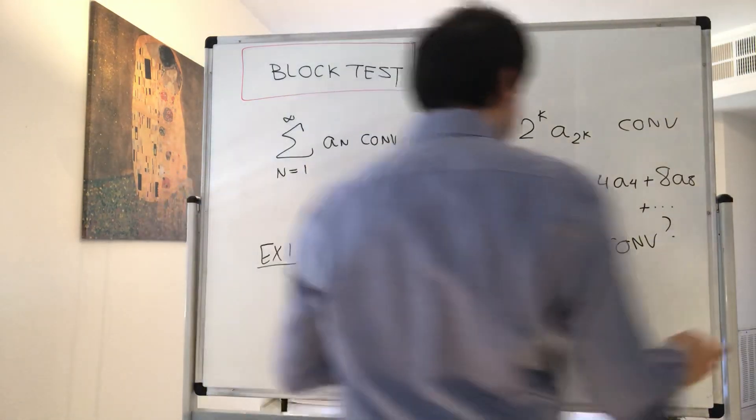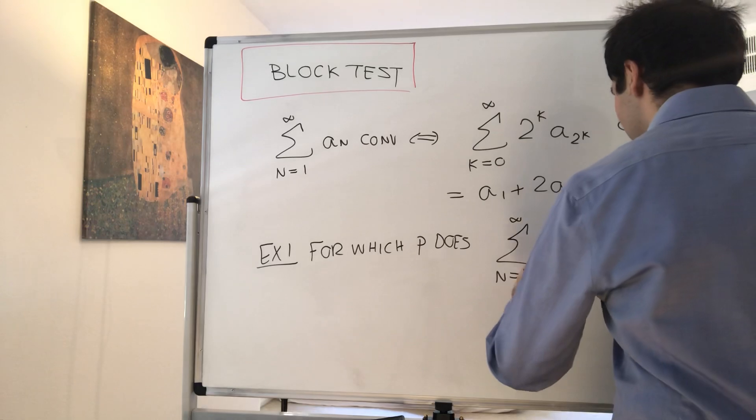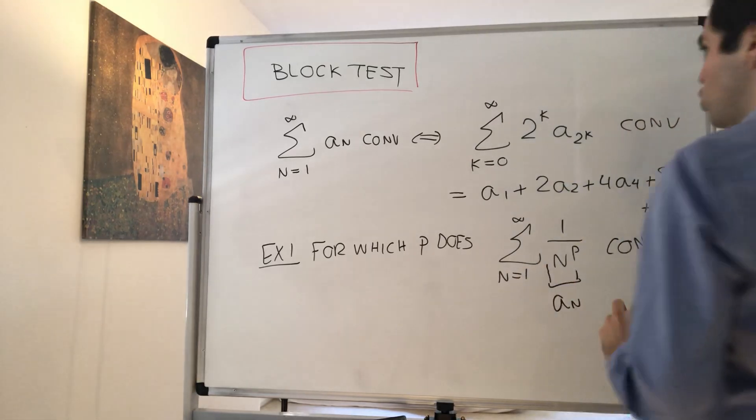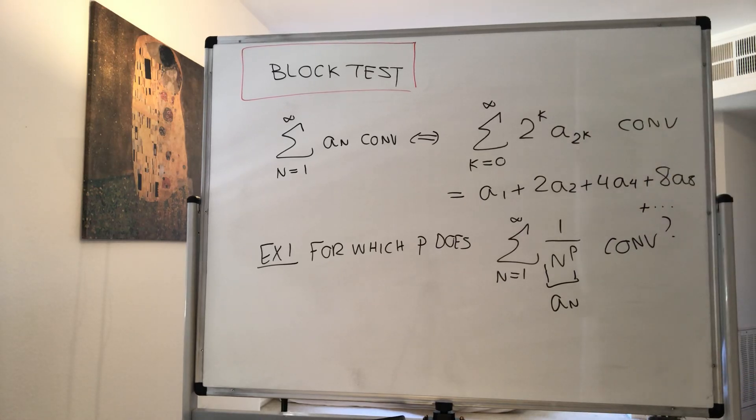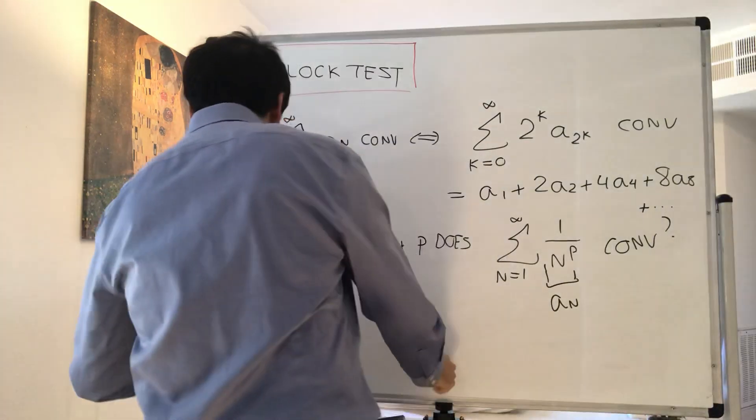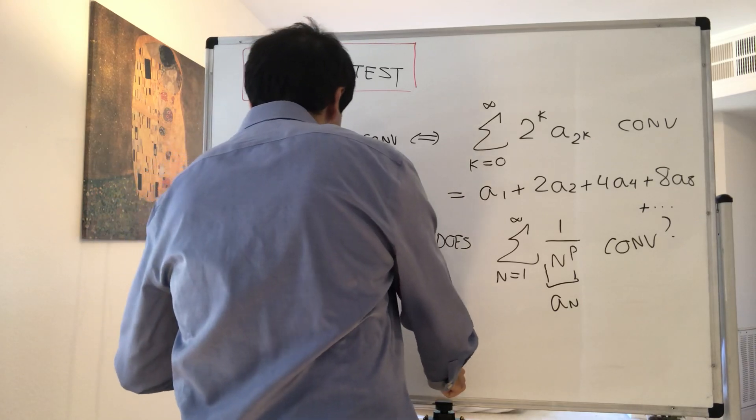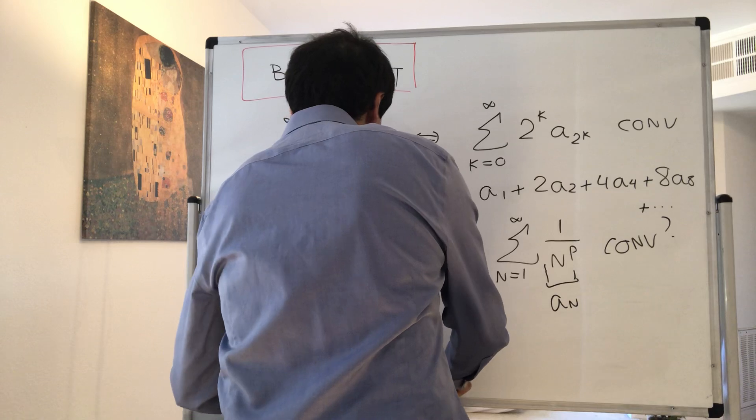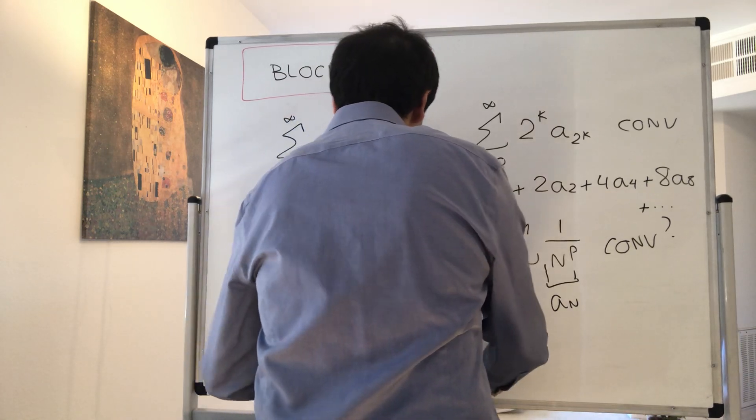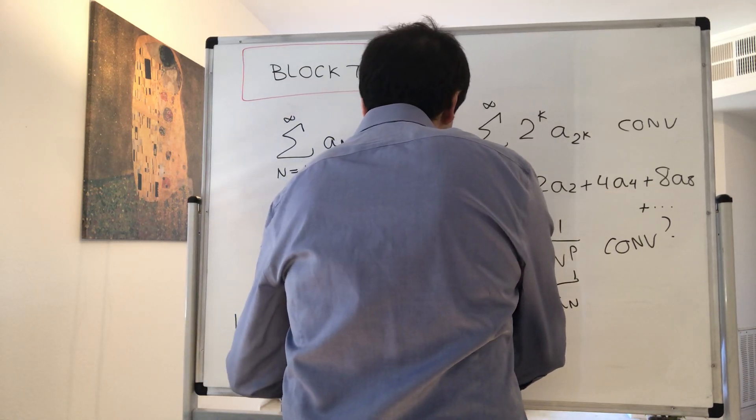Well, this is a_n, right? And so all we need to show is that 2^k times a_(2^k), that sum converges or diverges. So look at the sum from k from 0 to infinity of 2^k times a_(2^k).